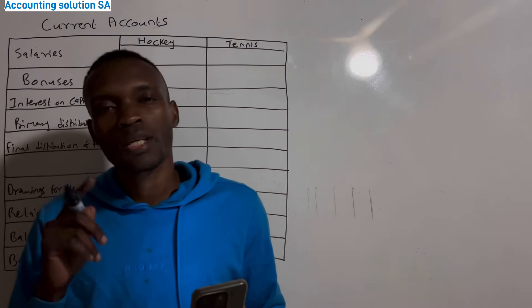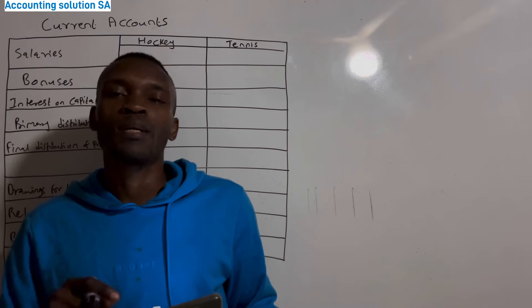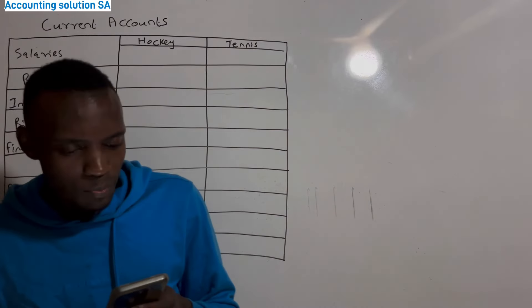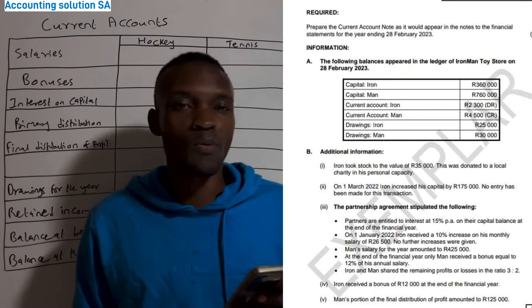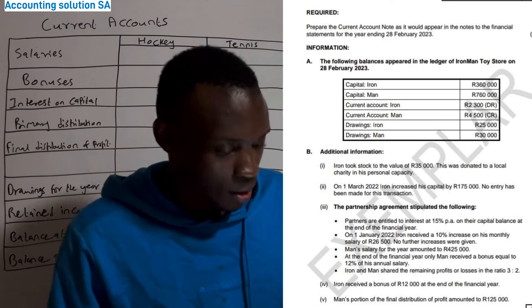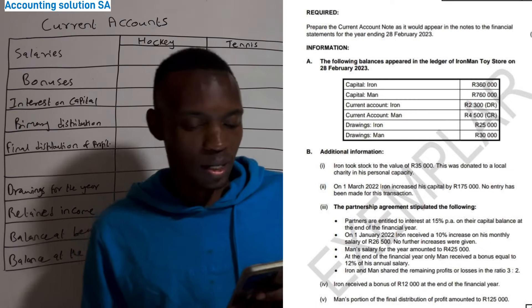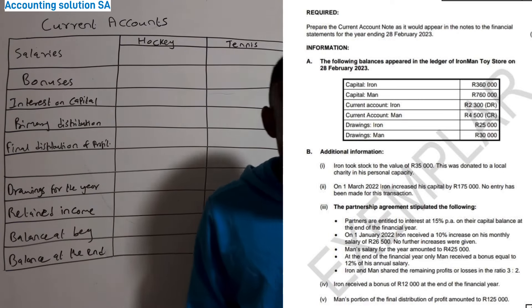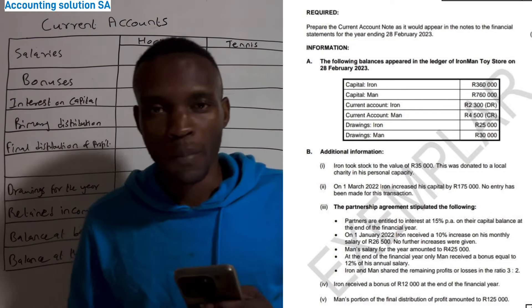Please subscribe to both channels: Accounting Solution and E-Learning Solution SA — they are my channels and you'll get different lessons on different subjects. They said: prepare the current account note as it will appear in the notes to the financial statements for the year ending 28 February. The following balances appear in the ledger account of Ion Mentor Store on 28 February 2023 — we've been given capital, current account, and drawings. Additional information: Ion took stock to the value of 35 000.